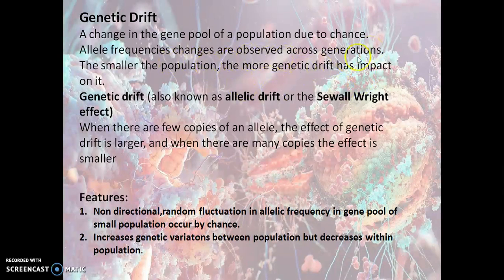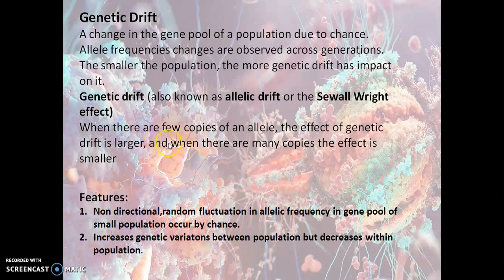Smaller the population, the more impact genetic drift has on it. Genetic drift is also known as allelic drift or the Sewall Wright effect. When there are few copies of an allele, the effect of genetic drift is larger. When there are many copies, the effect is smaller.